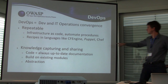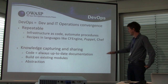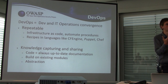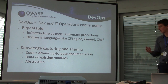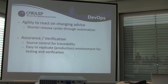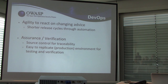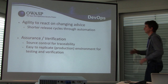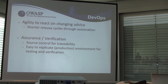We are going to use Puppet in this presentation. It allows for knowledge capturing and sharing because the code and recipes provide up-to-date documentation of how the setup is done. You can build on existing modules and share knowledge, and it provides abstraction — not every sysadmin or developer needs to know all the details or be a cryptographer. It allows agility because it shortens release cycles, enables easy small changes, and provides assurance through source control and easy environment replication.